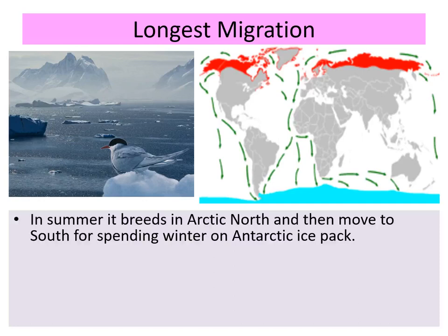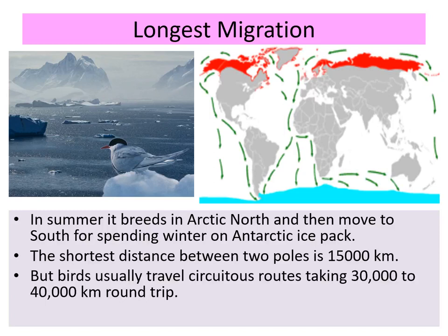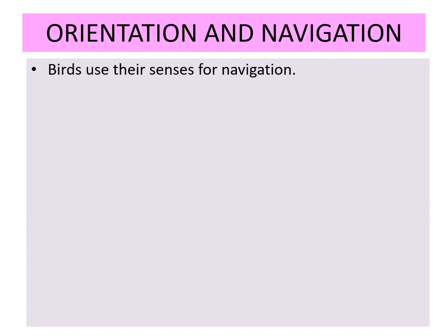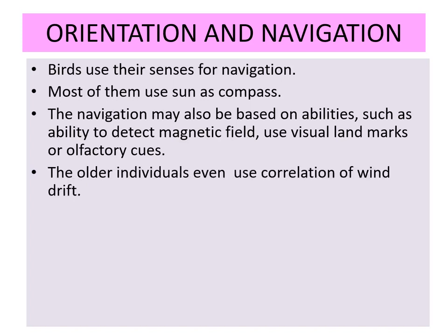The longest migration is shown by the Arctic Tern. In summer it breeds in the Arctic North and then moves south to spend winter on Antarctic ice packs. The shortest distance between the two poles is 15,000 kilometers, but the bird usually takes a route of 30,000 to 40,000 kilometers round trip. For orientation and navigation, birds use their senses — most use the sun as a compass. Navigation may also be based on ability to detect the magnetic field, use visual landmarks, or follow olfactory clues.